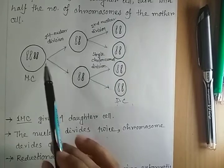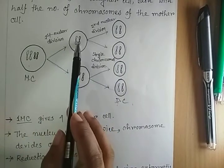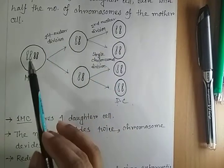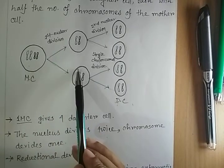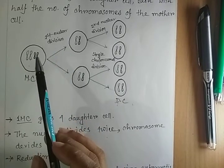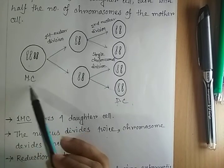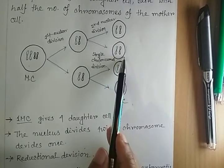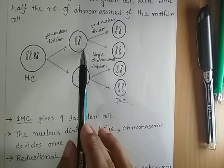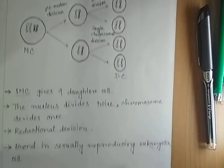During meiosis cell division, two successive nuclear divisions take place. This is the first division and this is the second division. During the first division, the number of chromosomes in daughter cells becomes half compared to their mother cell. The second nuclear division is completely equal to mitotic division.